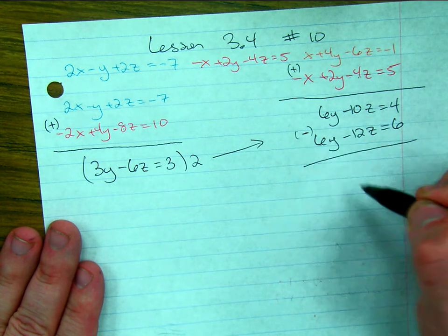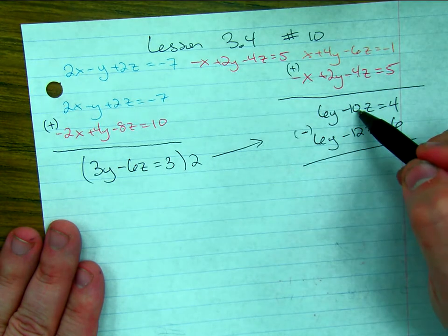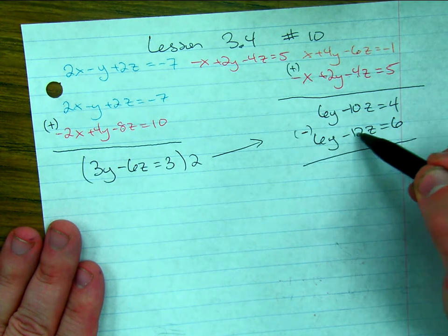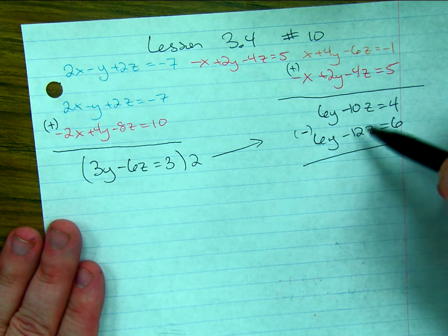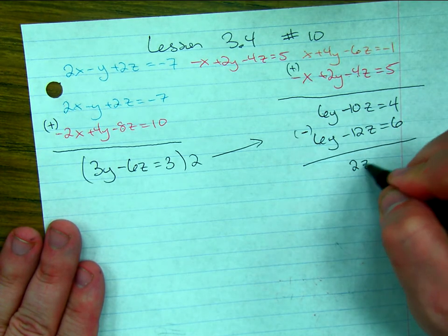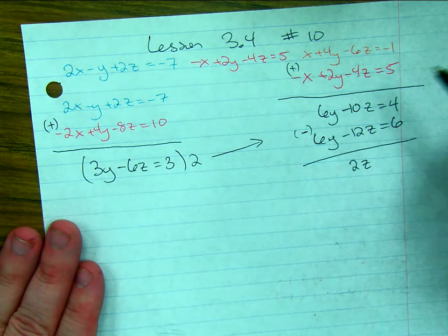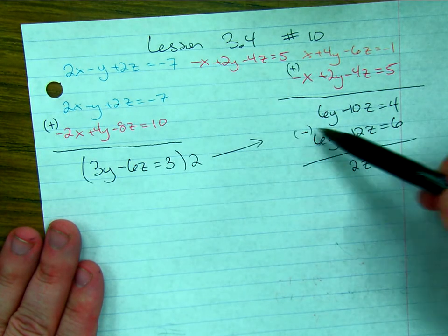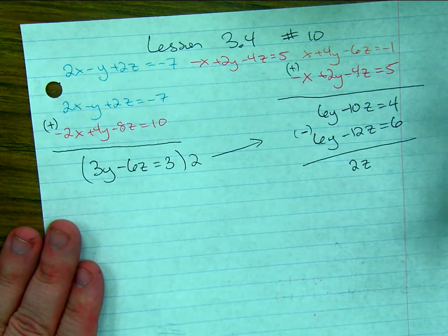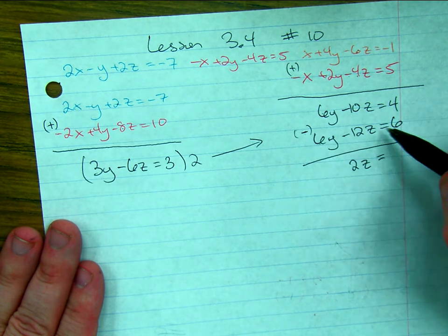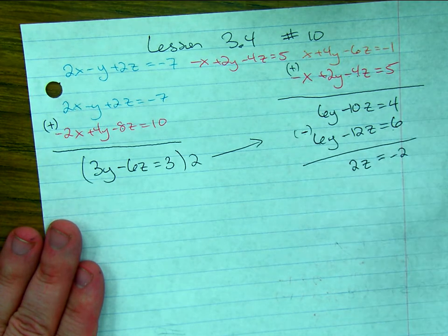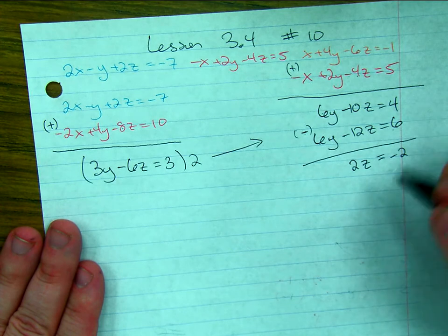6y minus 6y, no more y's. Negative 10 and I take away negative 12. I take away more negatives than I even had. That gets me up to a positive. Positive 2, in fact. Some people like to say subtracting a negative is the same thing as adding a positive. Overall it is. And then 4 minus 6 is negative 2. Dividing both sides by 2, I got that z equals negative 1.